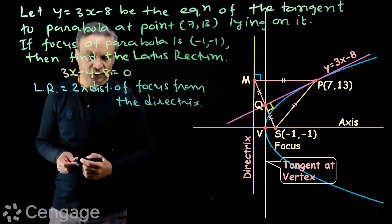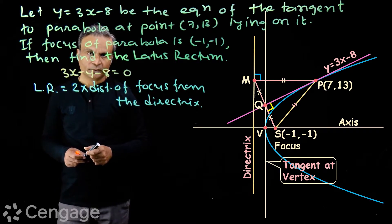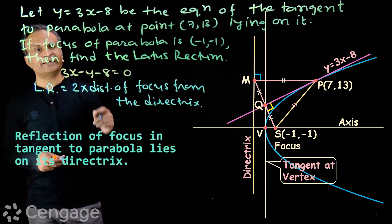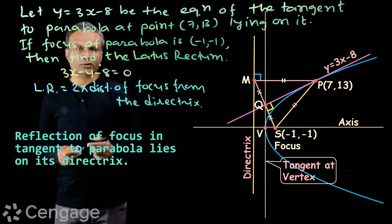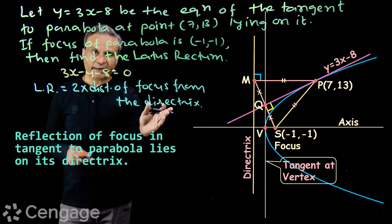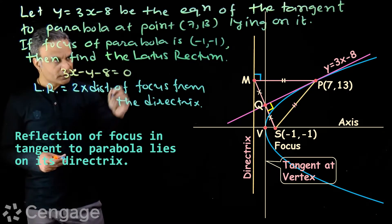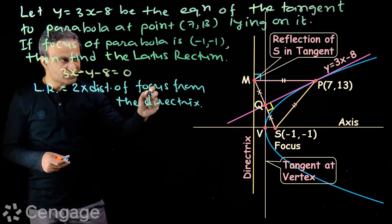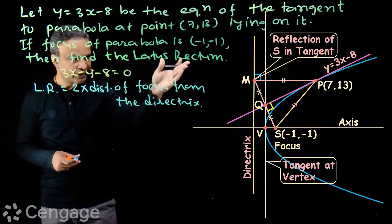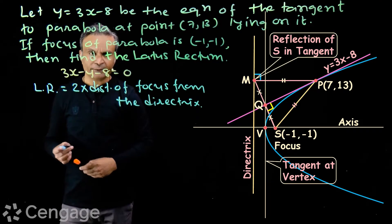We have the focus, and we can find the coordinates of point M using one property of tangent: the reflection of the focus in the tangent line lies on the directrix. So here, M is the reflection of the focus in the tangent to the parabola at point P, and we can find the coordinates of point M.